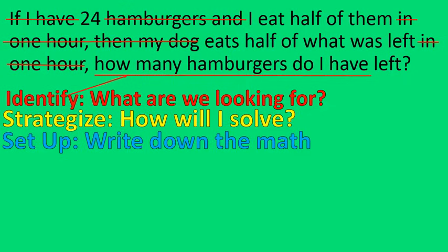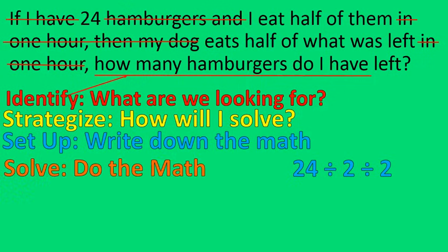Then step three: set it up. That's the step where I actually write down the math. I had 24, I'm dividing it by two, and then I'm taking what's left and dividing it by two again. Step number four: solve it — actually do the math. 24 divided by two is 12. 12 divided by two is 6. So my answer is 6.